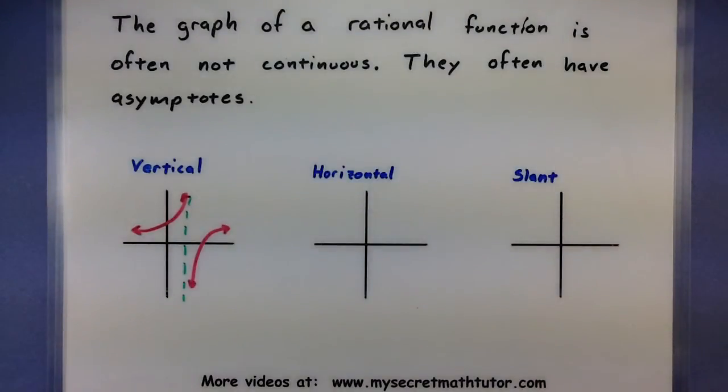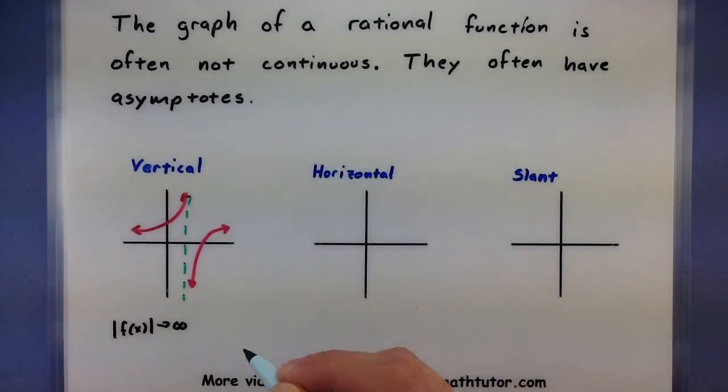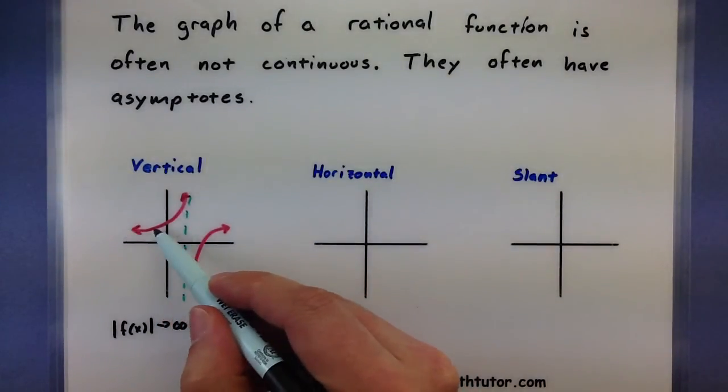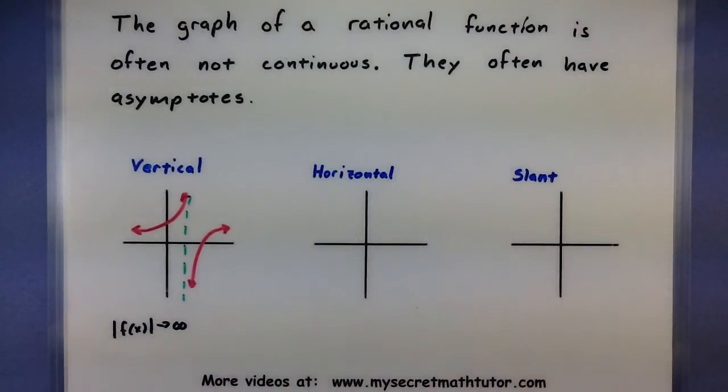The way we describe something like a vertical asymptote is we say that the value of the function is approaching infinity. So whether I'm approaching on this side and I'm going to positive infinity, or this side and I'm going to negative infinity, the function is going towards infinity.